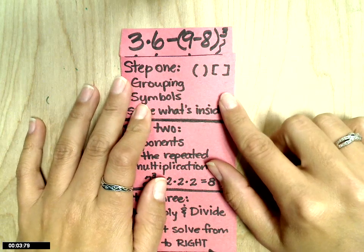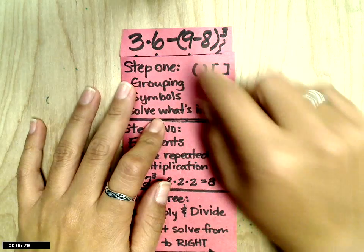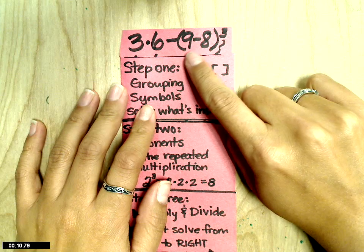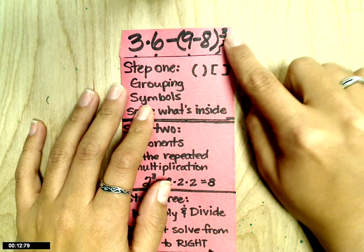This is a quick foldable to go over order of operations. Up on top is the expression: 3 times 6 minus parentheses 9 minus 8 to the third power.